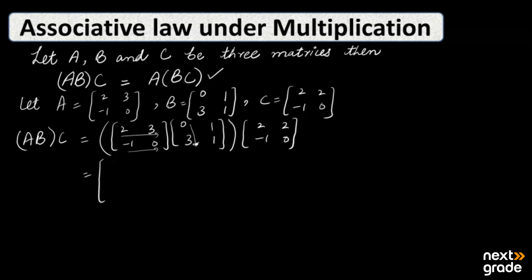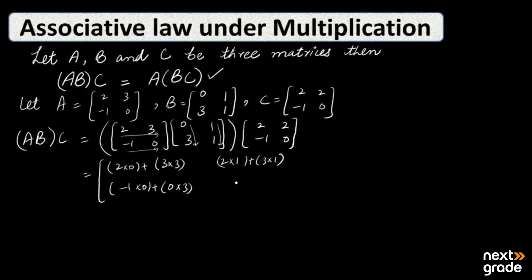We will multiply the two matrices A and B. For the first column: 2 multiply 0 plus 3 multiply 3. Similarly, minus 1 multiply 0 plus 0 multiply 3. For the second column: 2 multiply 1 plus 3 multiply 1. Similarly, minus 1 multiply 1 plus 0 multiply 1.